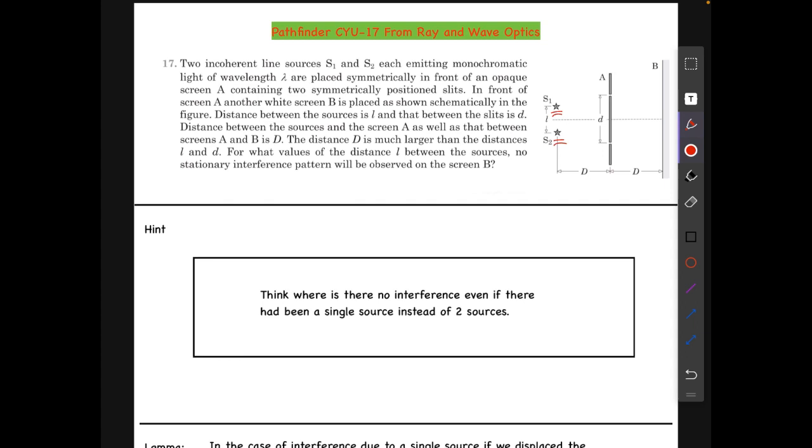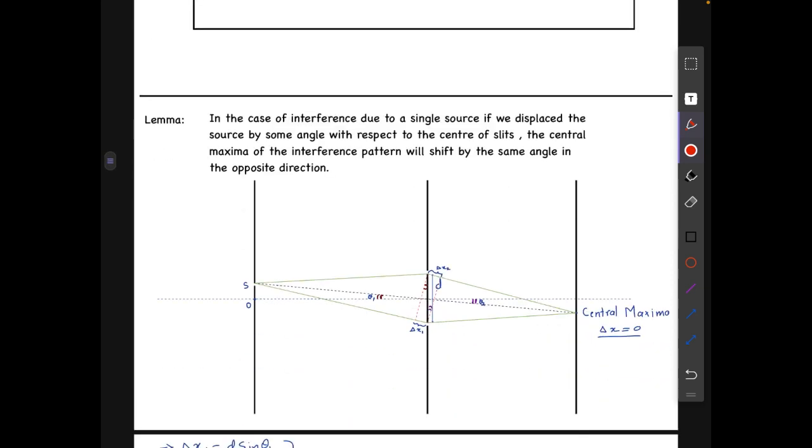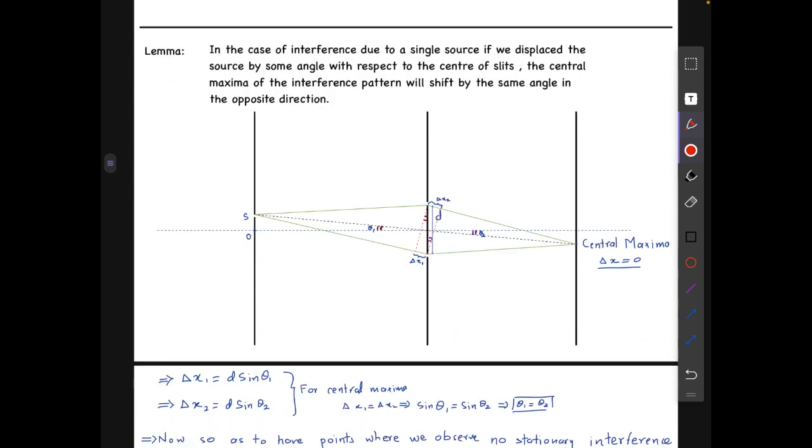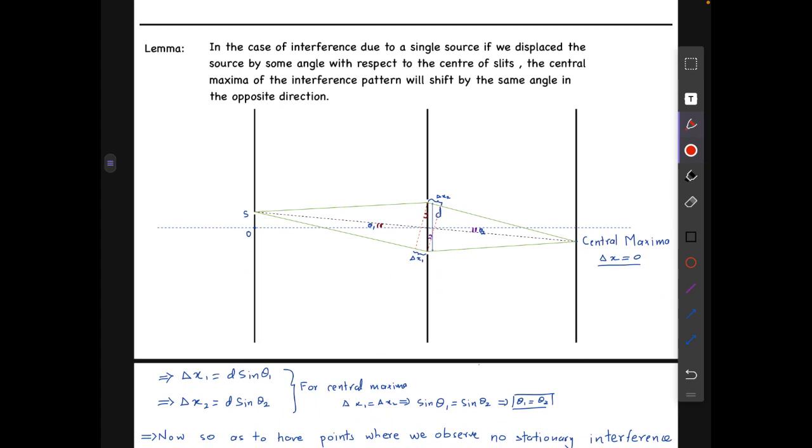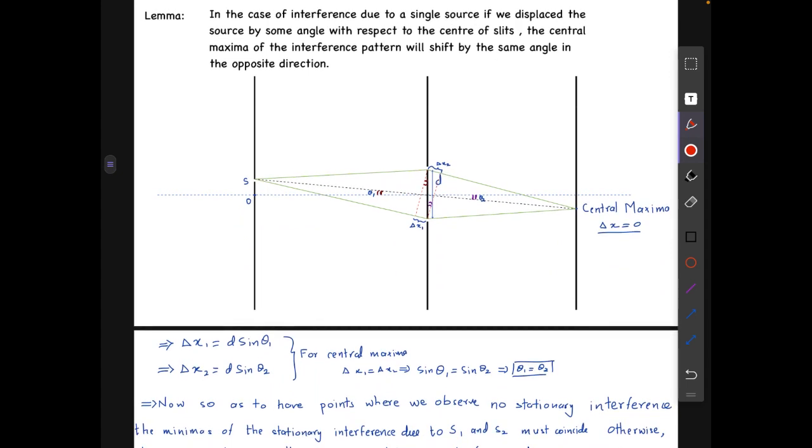For this solution I will need one lemma or a general result which might be commonly known to you. I'll just prove it here. The lemma is: in case of interference due to a single source, if we displace the source by some angle with respect to the center of slits, the central maxima of the interference pattern will shift by the same angle in the opposite direction.